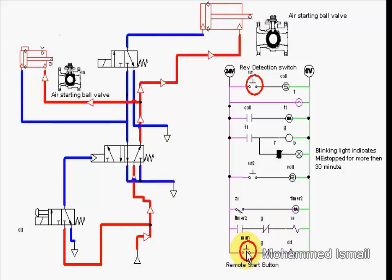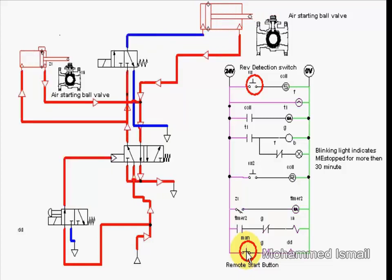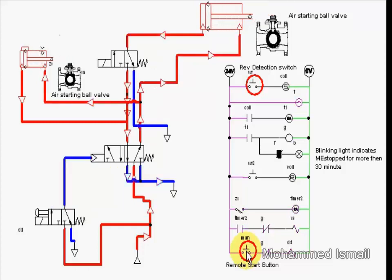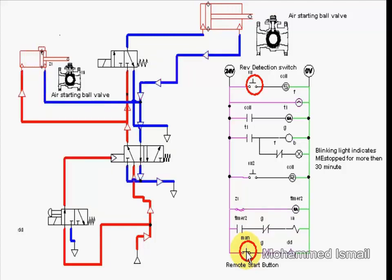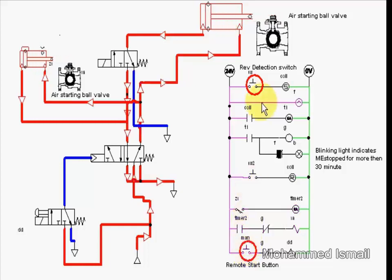The above figure shows pneumatic and electrical control implemented to achieve the slow turning sequence. The sequence is achieved by pneumatic directional valve, solenoid valve, timer, revolution detector, slow turning, and main air starting valve.